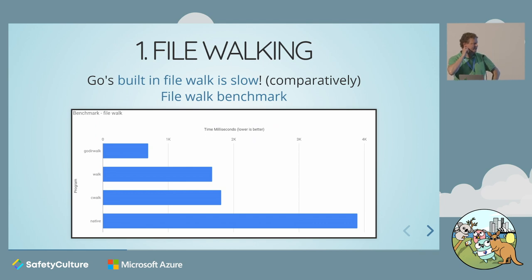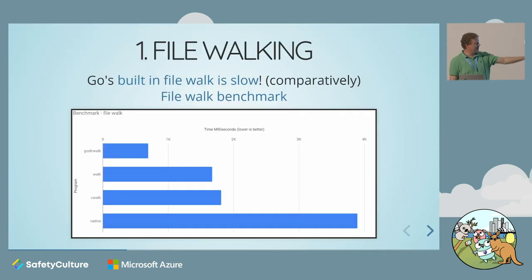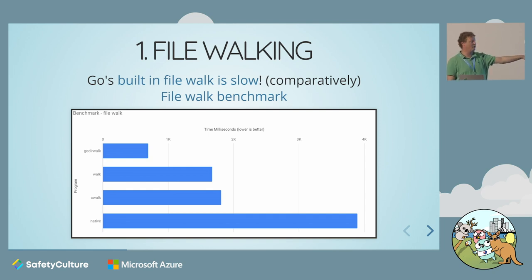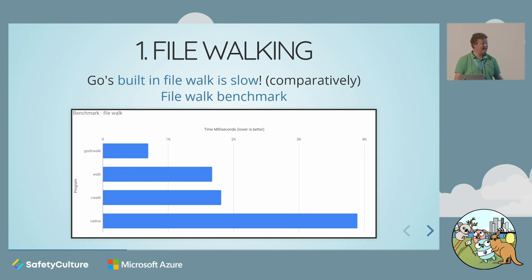The first thing I discovered is that Go's built-in file walk is slow compared to other libraries out there — I think because it's trying to be deterministic, though don't quote me on that. I ended up writing a file walk benchmark to see which library is actually the fastest. I found four: godirwalk, Walk, godirwalk, and the native one. Godirwalk is interesting — it runs in a single goroutine while the others attempt to run in parallel — and it's still the fastest. The reason is it avoids os.Stat calls, which are reasonably expensive.